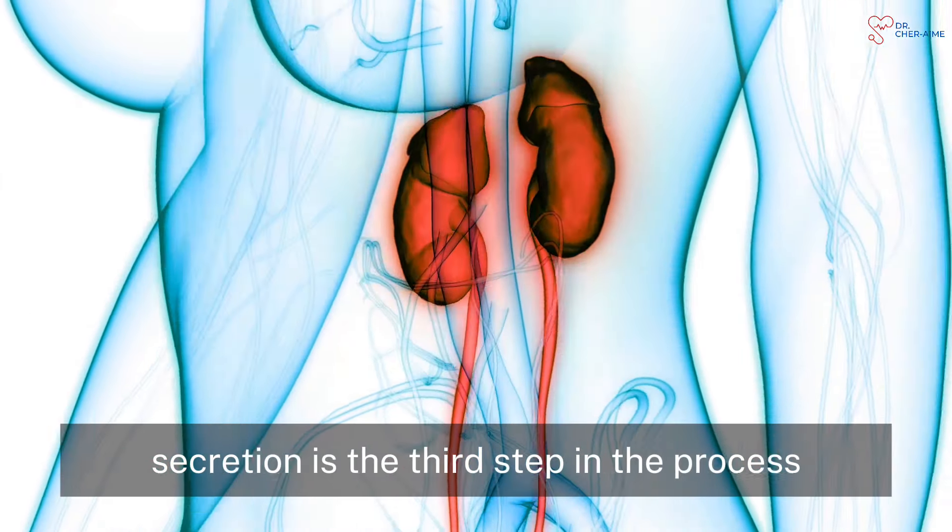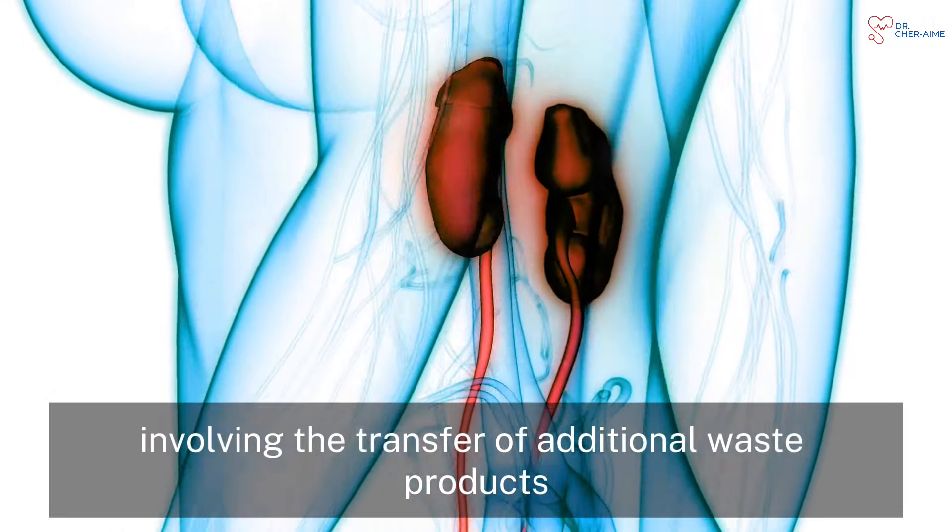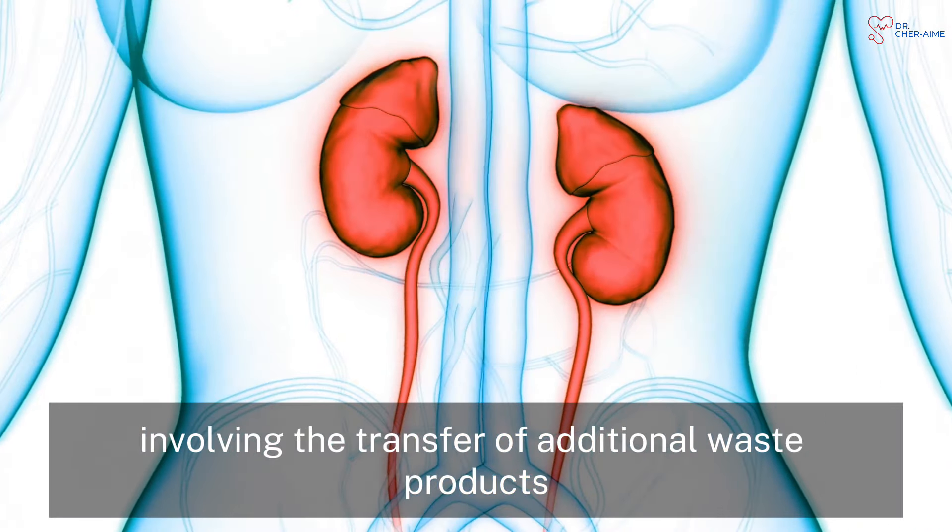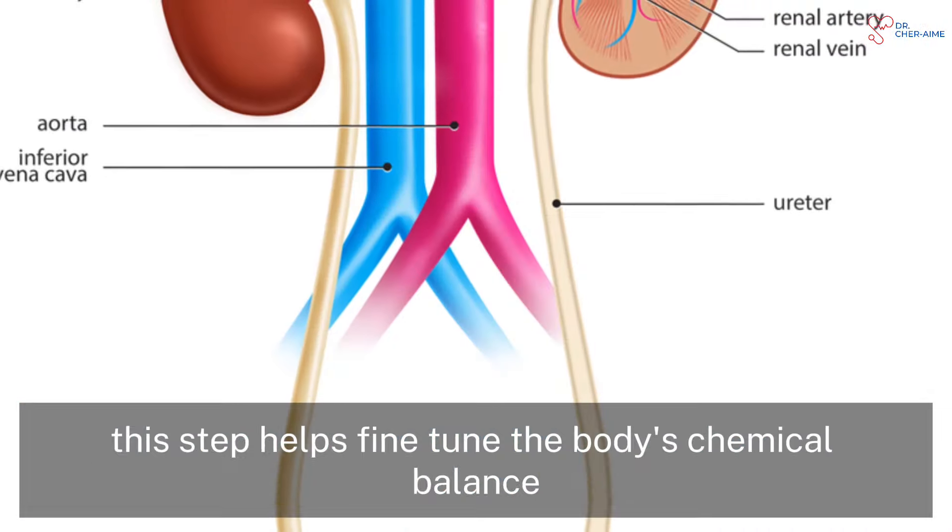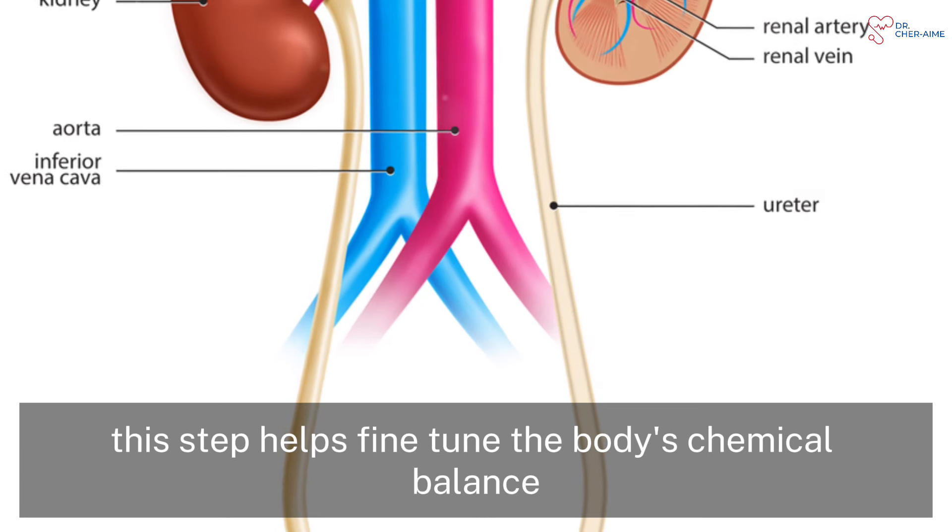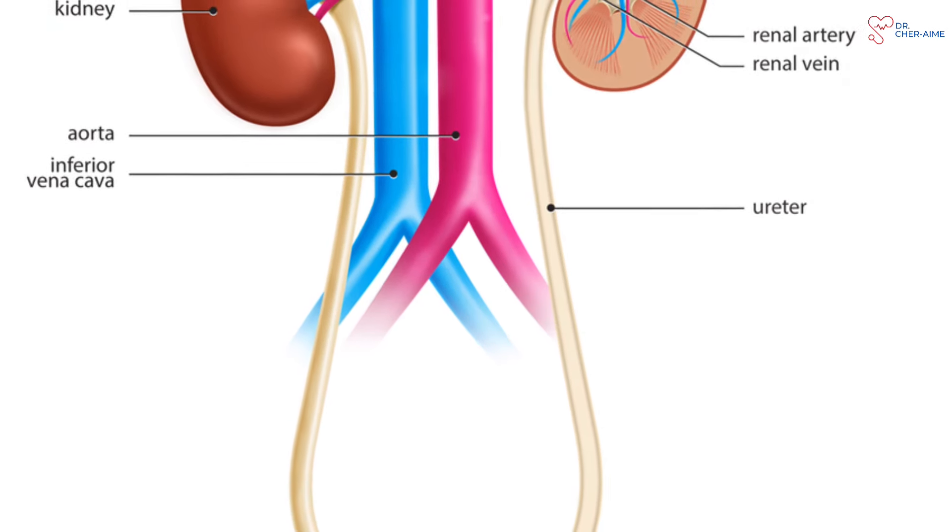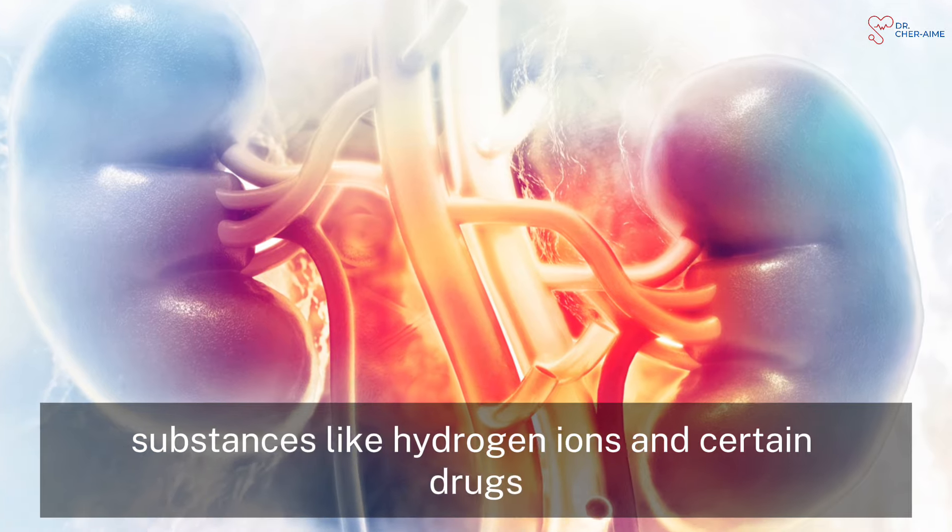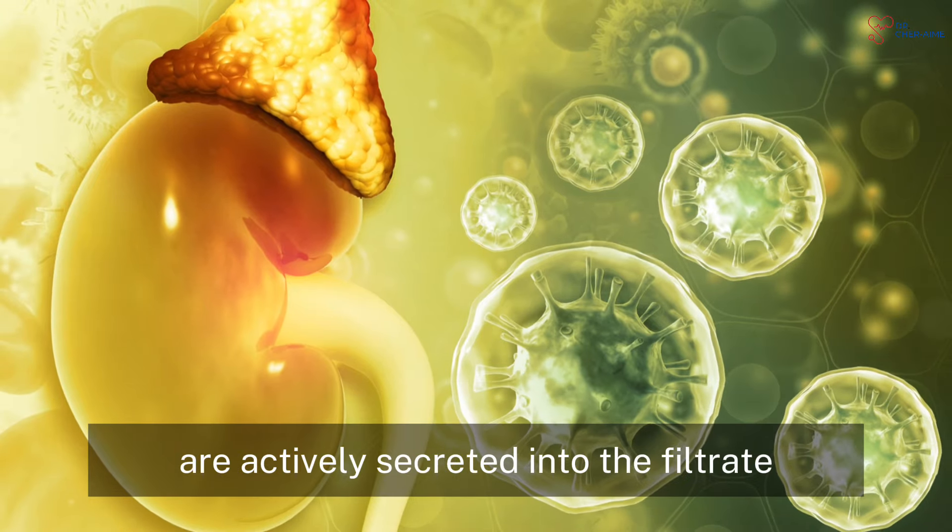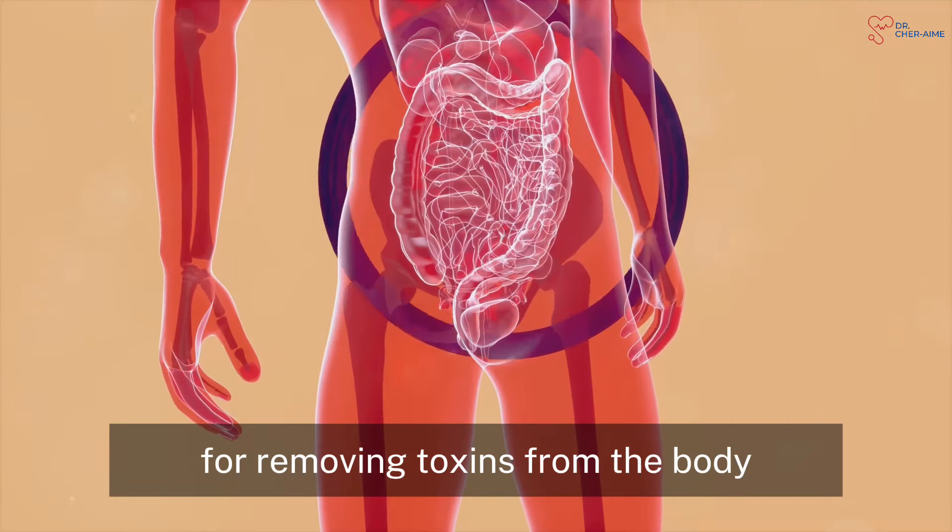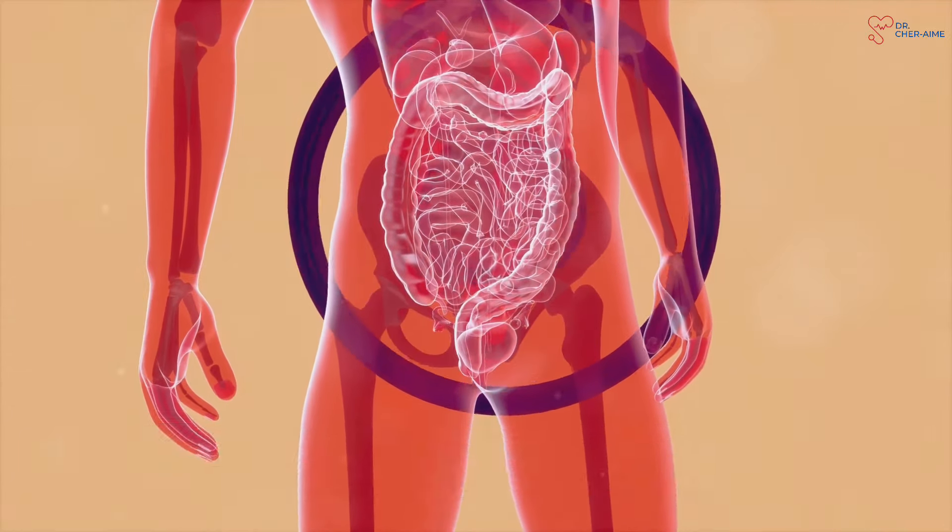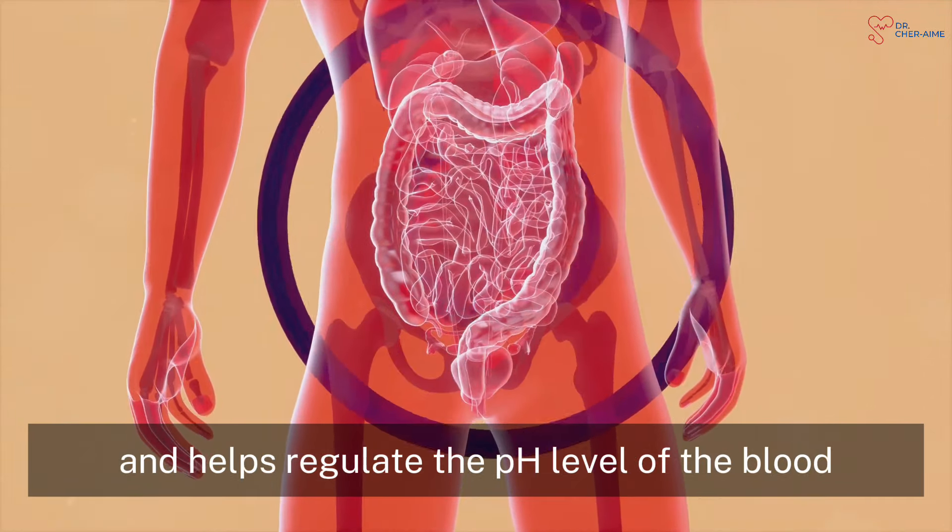Secretion is the third step in the process, involving the transfer of additional waste products from the blood into the tubules of the nephron. This step helps fine-tune the body's chemical balance. Substances like hydrogen ions and certain drugs are actively secreted into the filtrate. This process is essential for removing toxins from the body and helps regulate the pH level of the blood.